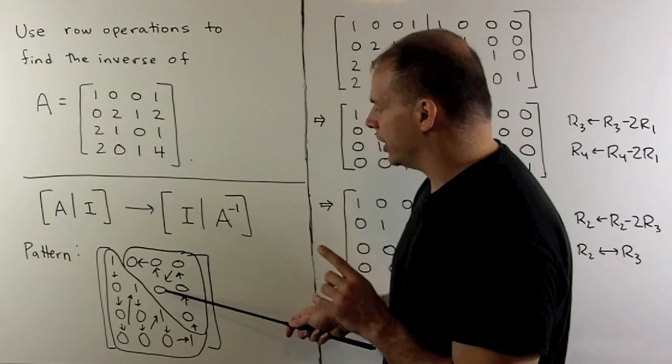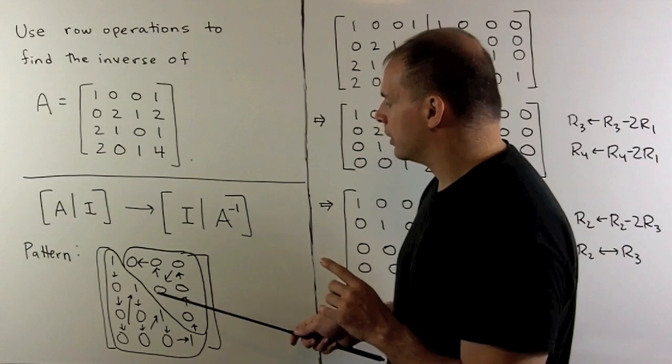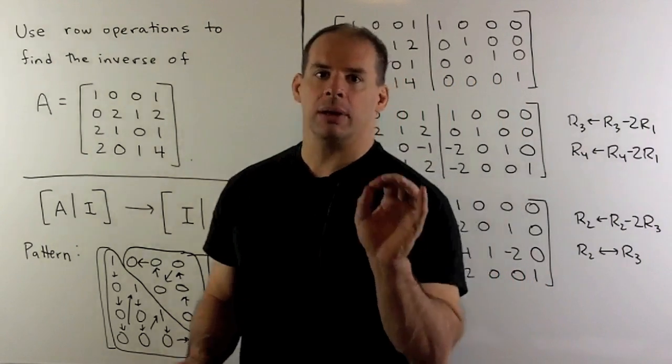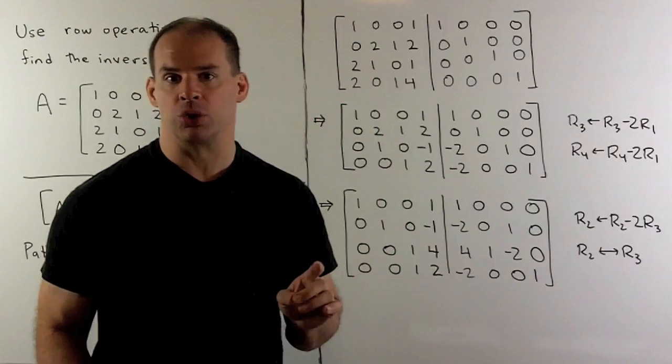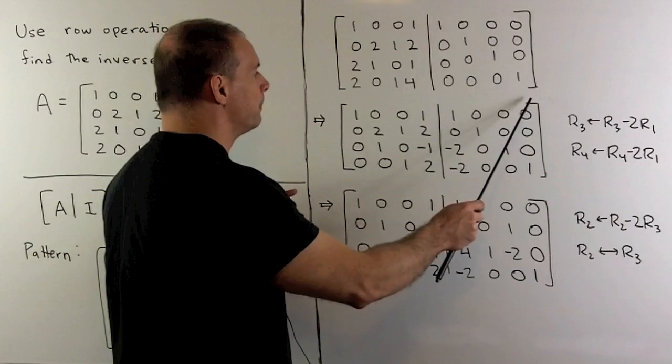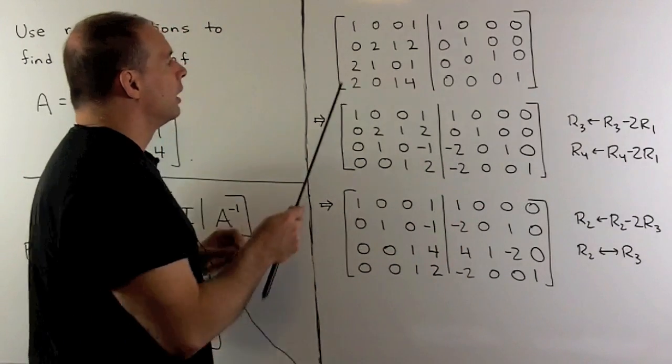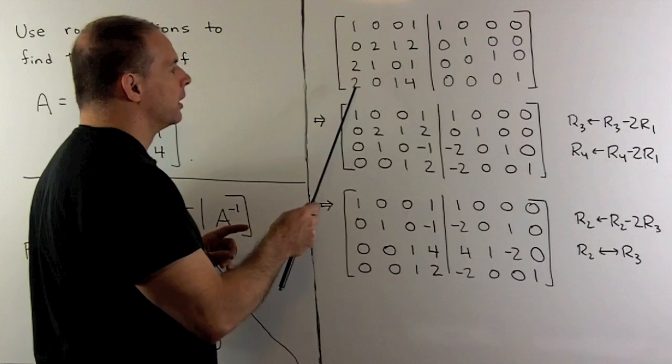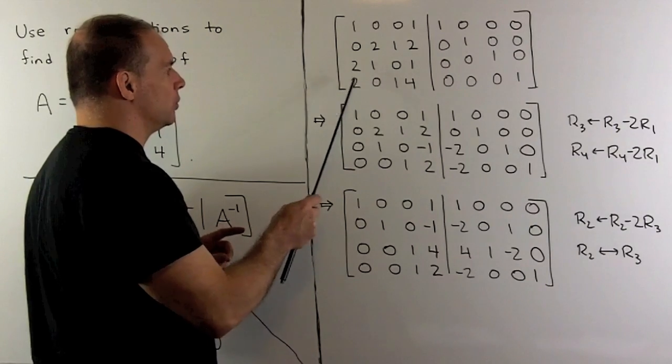Now I won't review the row operations since I'm hoping you have the three by three case under control. So I start by augmenting our matrix with the four by four identity. I want one up here, which we have, and then I want all zeros beneath. So we want to eliminate these two twos here.